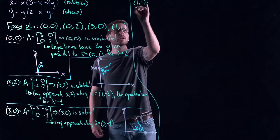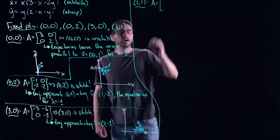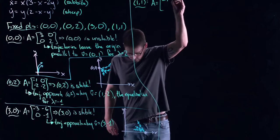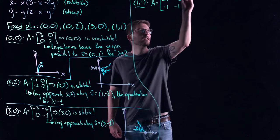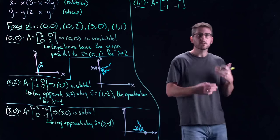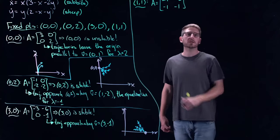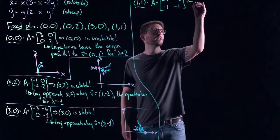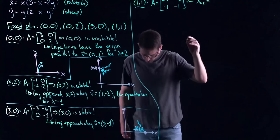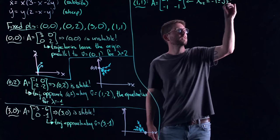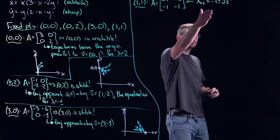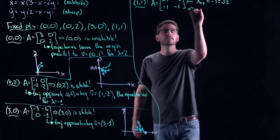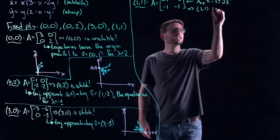Let's look at the fixed point (1, 1). Calculating the Jacobian about this point gives a full matrix: minus 1, minus 2, minus 1, minus 1. This is a 2×2 matrix, so we can use the trace-determinant formula for eigenvalues. The eigenvalues lambda 1 and 2 are equal to minus 1 plus or minus the square root of 2. Since the square root of 2 is about 1.4, one eigenvalue is positive and one is negative.